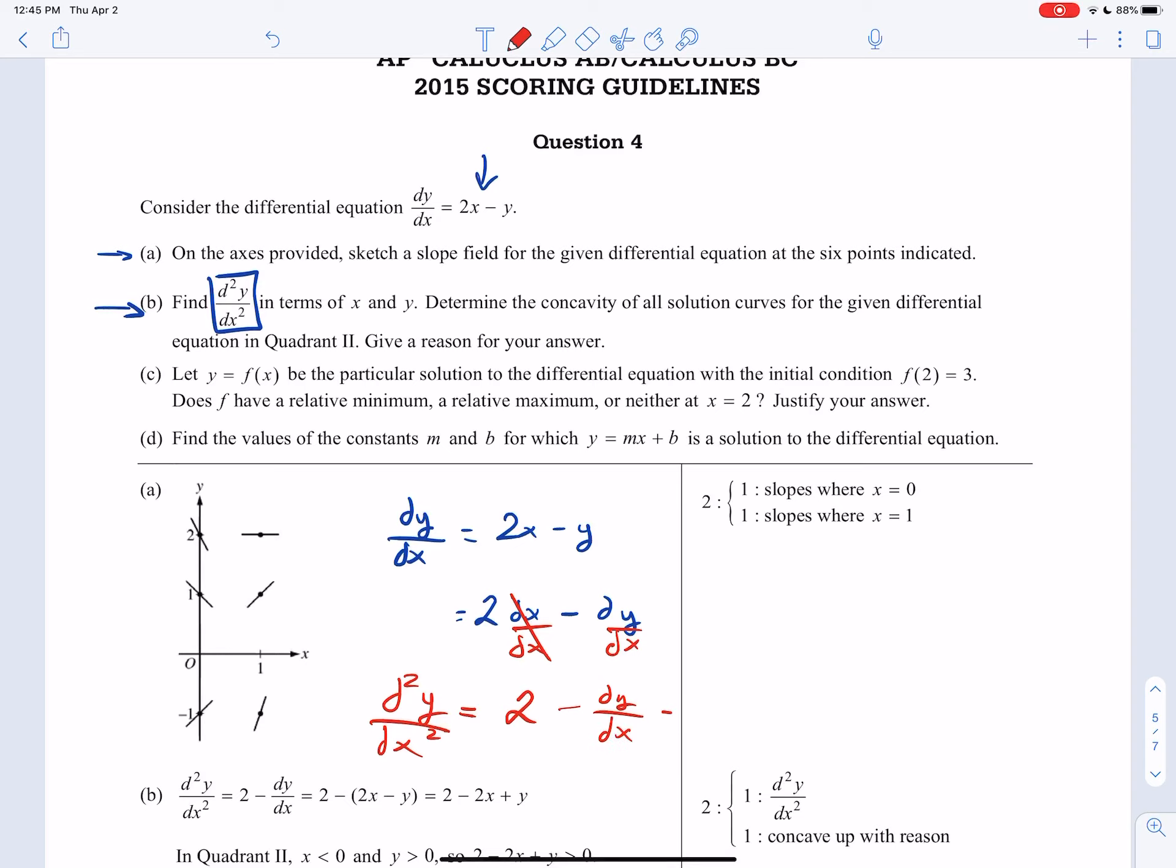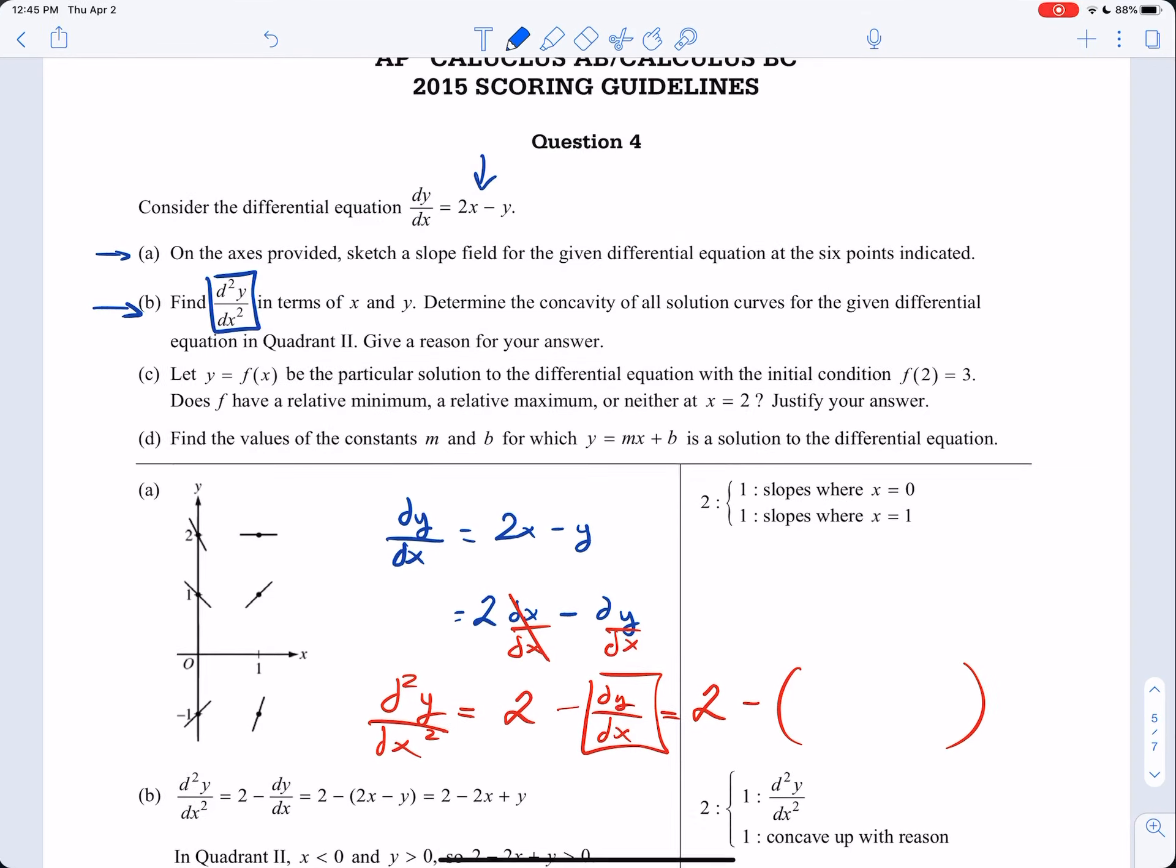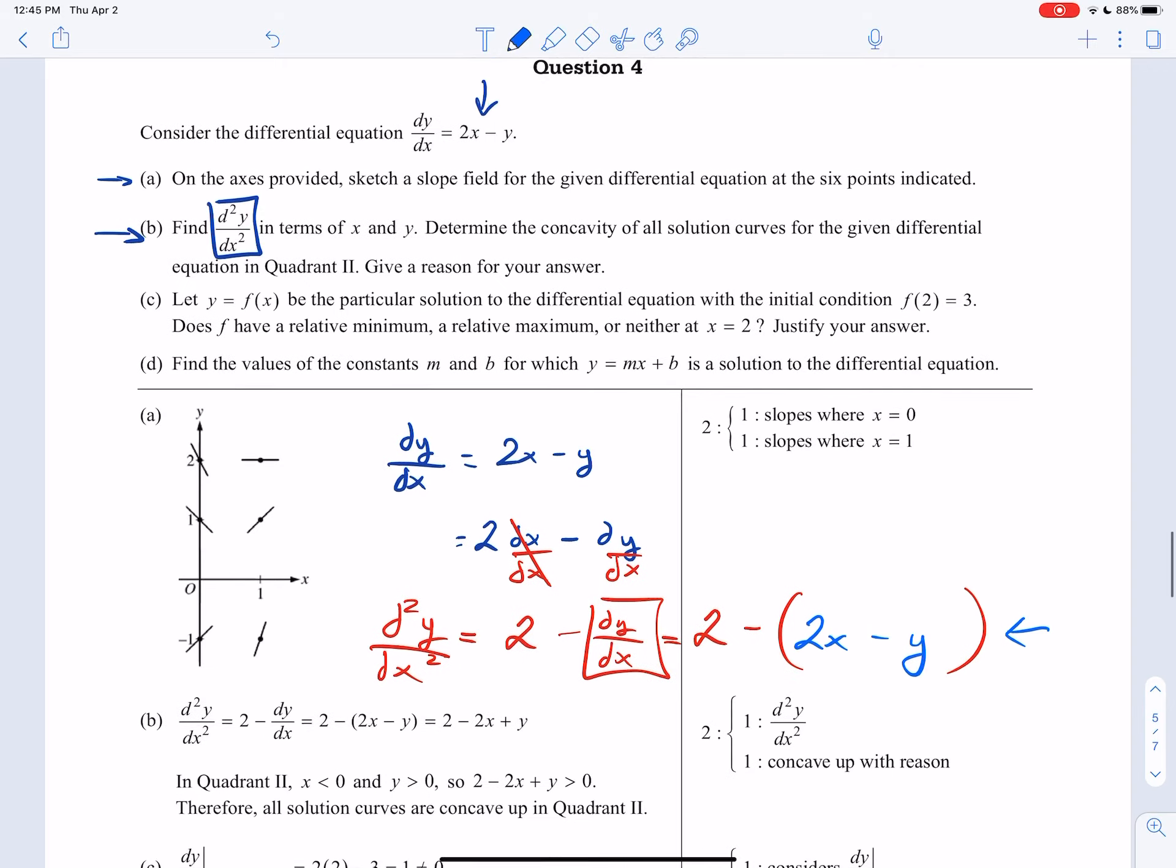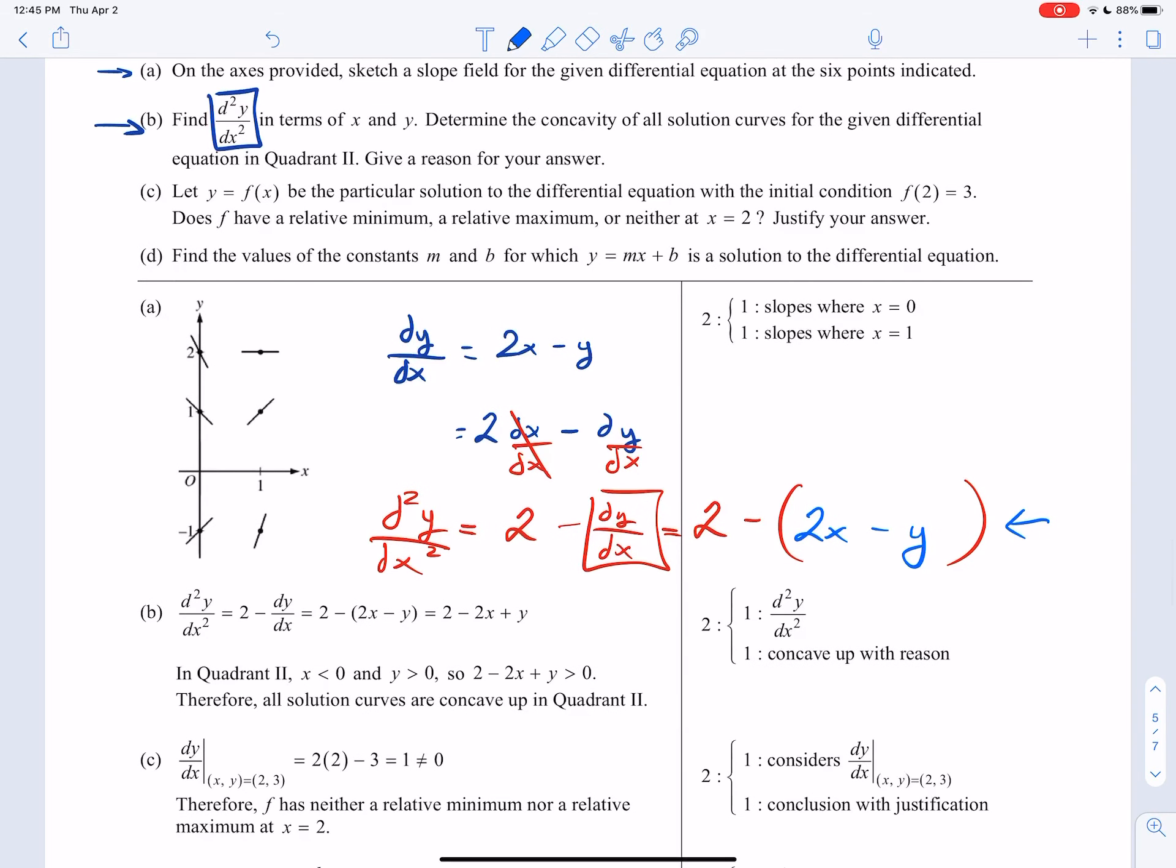So basically, this is what we have. Our second derivative will equal 2 minus dy/dx. But wait, dy/dx, we know what that is. That's just 2 minus what we had originally. This does pop up very often, you guys. So we'll leave it just like that. They distributed the negative there. Same thing, really.